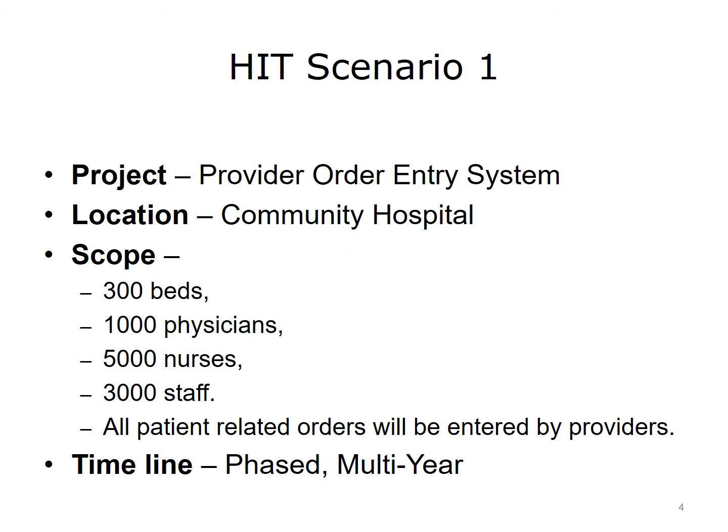For each department or tier, you would develop a smaller scope describing the department — how many beds, physicians, nurses, and ancillary staff are on the unit. The scope would also include the types of alerts staff would receive and specific unit details. For instance, in an ICU, nurses will probably submit more orders than on a regular unit. These smaller scopes must align with the larger scope already defined.